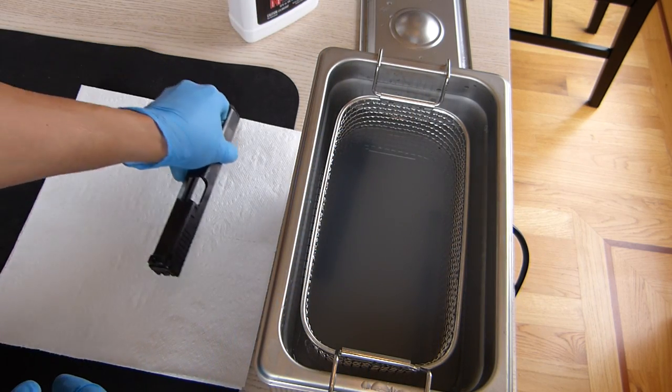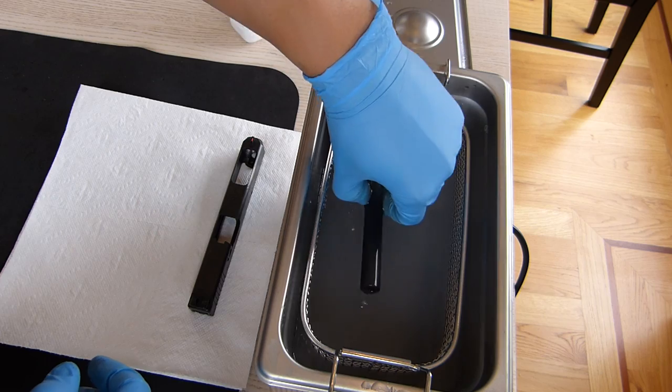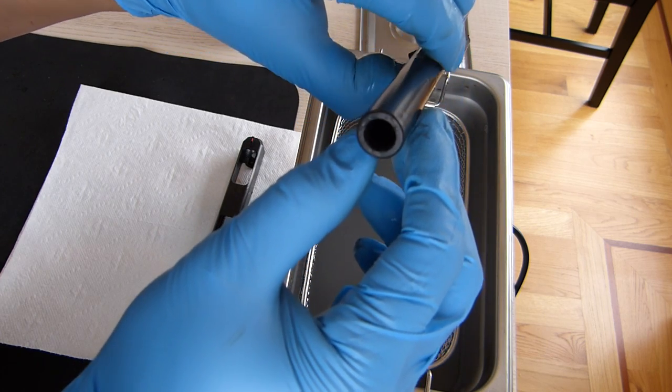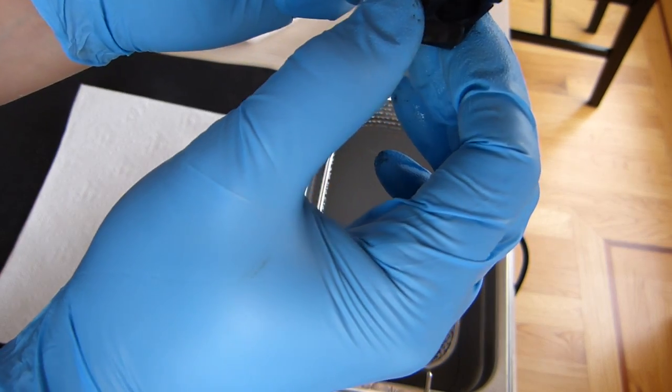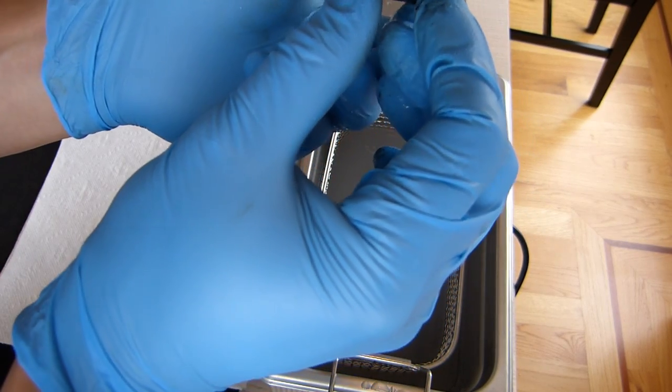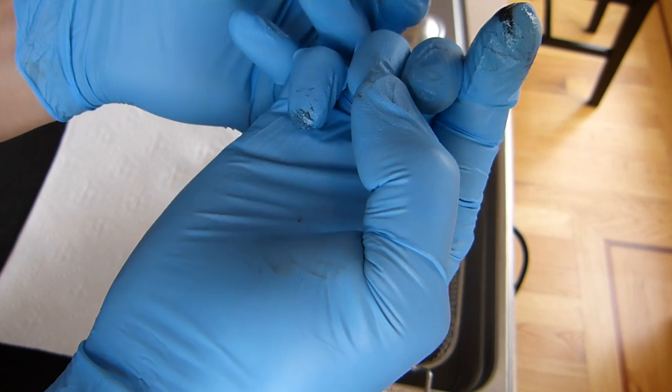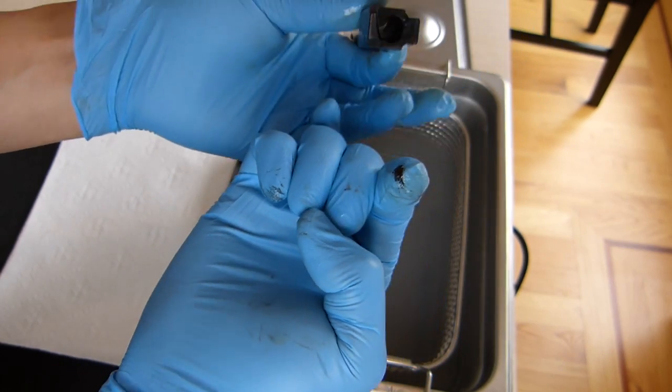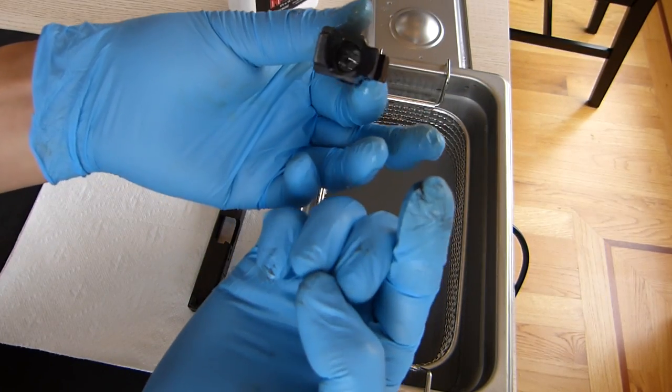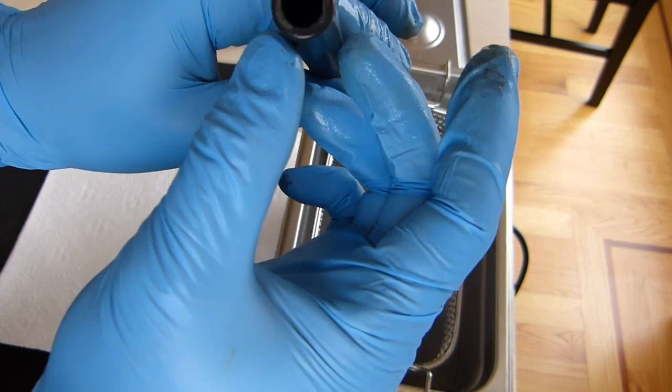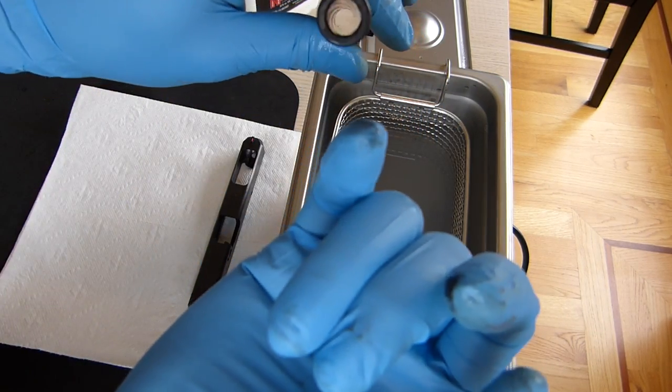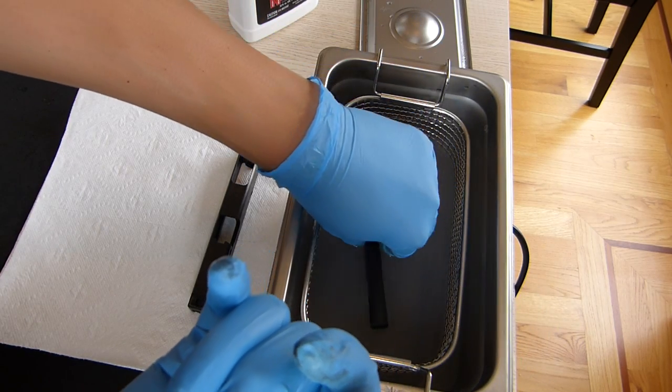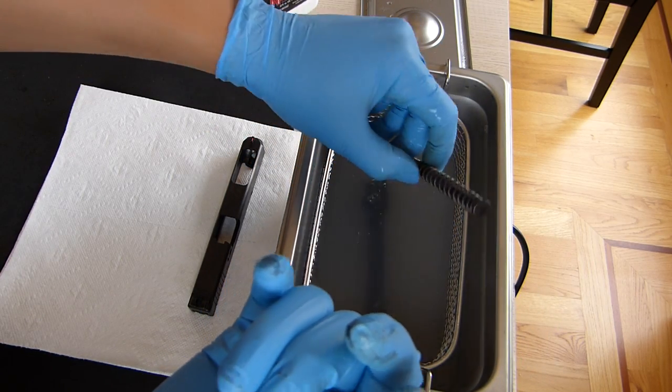Let's take a look at the barrel. The barrel, on the outside, it looks very clean. Okay, so there's some stuff that did not come off. It looks like the end of the barrel too, there's still a little bit of fouling. So I'm going to place that back in there and let it keep going.